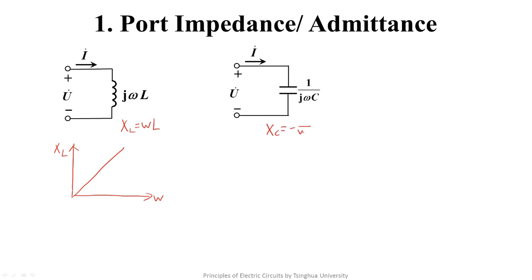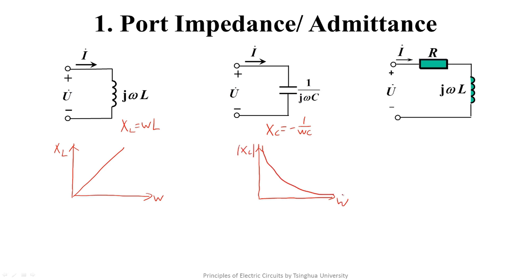For capacitors, the capacitive reactance is similarly defined. We can draw the curve of capacitive reactance changing with frequency. In order to be expressed in the first quadrant, we draw the absolute value, which is in the form of a reciprocal. Next, we show a slightly more complicated problem. Seen from the port, the impedance has a module and an impedance angle, both of which are functions of frequency.